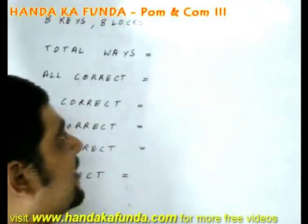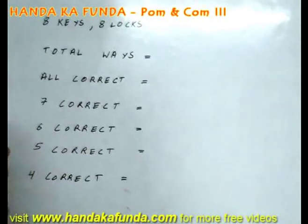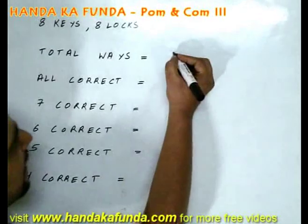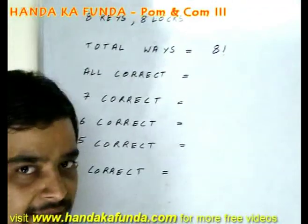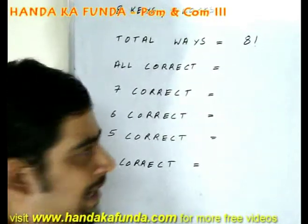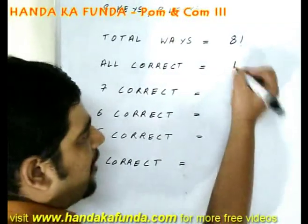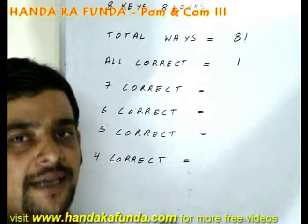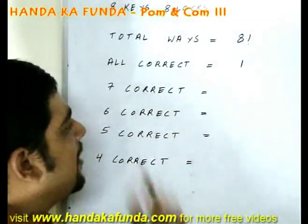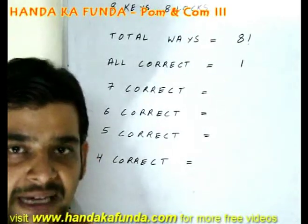Let us take an example. Suppose I have 8 keys in 8 locks. In how many ways can I put the 8 keys in the 8 locks? That is simply 8 factorial. In how many ways can I do it such that all of them are correct? That is possible in only one way. When K1 goes in L1, K2 goes in L2, K3 goes in L3 and so on.